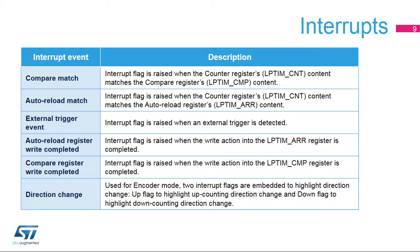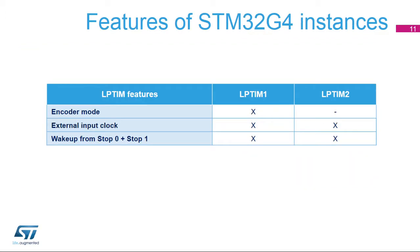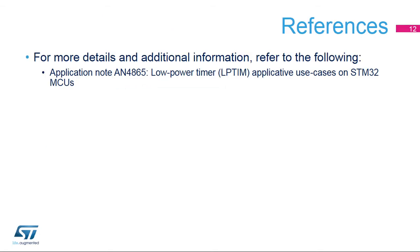The up and down direction change interrupts are raised when the encoder mode function is enabled and the counting direction is changed from up to down or vice versa. The counting direction of the low-power timer's counter reflects the rotation direction of the quadrature sensor. The low-power timer peripheral is active in run, sleep, and stop power modes, and is able to wake up the microcontroller from either sleep or stop modes. The STM32-G4 microcontroller embeds two LP-TIM peripherals, where only LP-TIM-1 supports the encoder mode. Wake up from stop 0 and stop 1 modes is supported by both LP-TIM instances. For more details, please refer to the documentation available on our website.